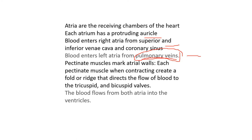Inside the atria, there are pectinate muscles. Each pectinate muscle, when contracting, creates a fold or ridge that directs the flow of blood to the tricuspid and bicuspid valves. When the muscular wall of the atria contracts, it wrinkles — like making an accordion structure that funnels blood into a hole — and the blood flows from the atria to the ventricles. Right is the tricuspid from the right atrium to the right ventricle; left is the bicuspid or mitral valve from the left atrium to the left ventricle.